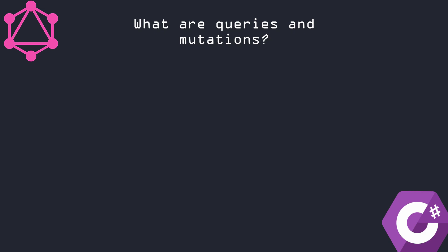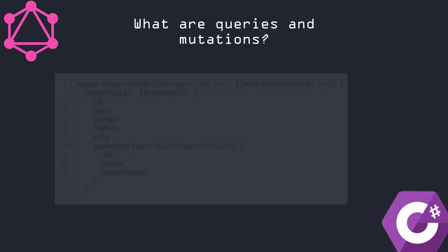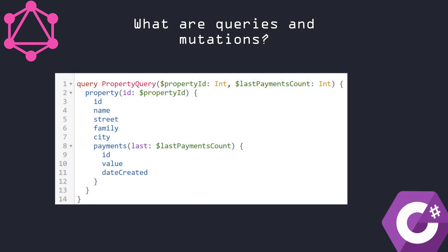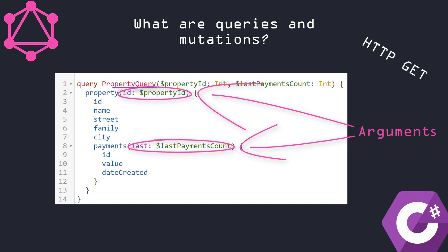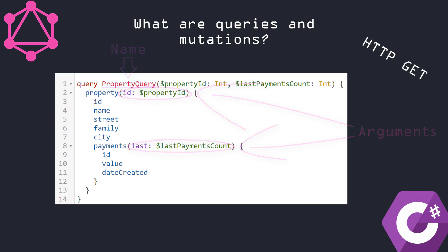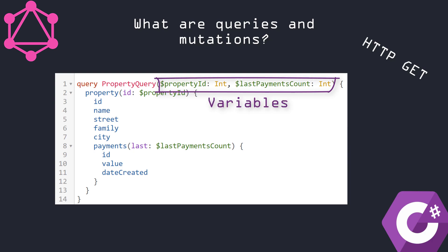Let's get started with the first question: what are queries and mutations? A GraphQL query is, for your surprise, a standard query — just like HTTP GET in the REST approach. It can take some arguments to fetch more specific data and it can have also its own name. With GraphQL we can determine our own variables and pass them inside our query.